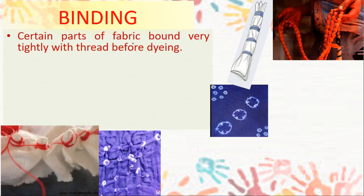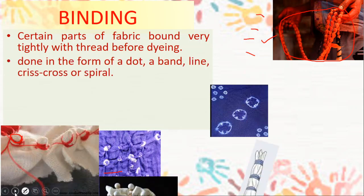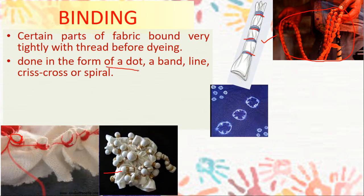The next technique is binding. Here, certain parts of the fabric are bound very tightly with thread before dyeing. The tying can be done in straight lines lengthwise by folding the fabric and then tying, or you can keep something in between and tie it with thread. Wherever you have bound with thread, no color will enter, and the rest of the part would be colored. It can be done in the form of a dot, a band, a line, criss-cross, or a spiral — whatever way you tie gives that design.